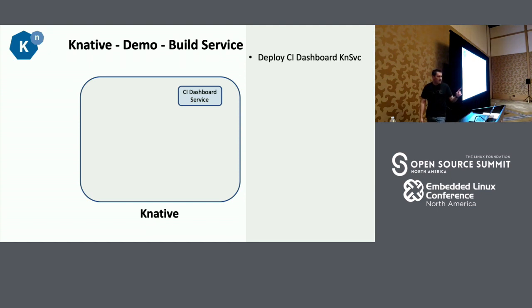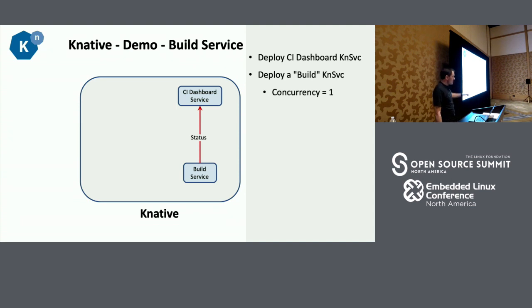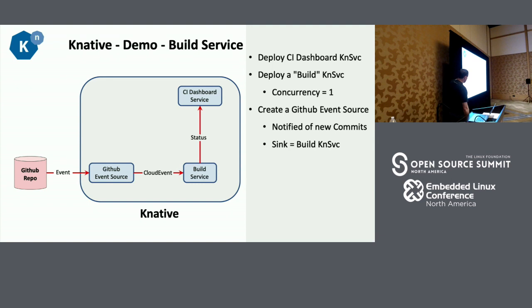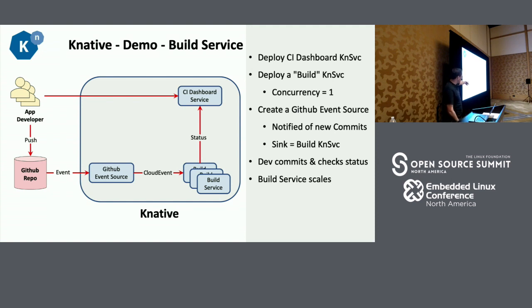In this eventing demo, we're going to deploy a CI dashboard service — think of this as your Travis or Jenkins UI. We'll then deploy a build service that knows how to take a GitHub repo, build it, push the Docker image to a registry, get the application up and running, and send status to the CI dashboard. I'll then create a GitHub event source to automatically subscribe to GitHub and receive push events. When a push event comes in, it gets received by the event source, passed on to my build service, does the build, and sends the results to the CI status webpage. The build service is set to only process one build at a time — container concurrency one — so you'll see it scale out as concurrent pull requests scale up.